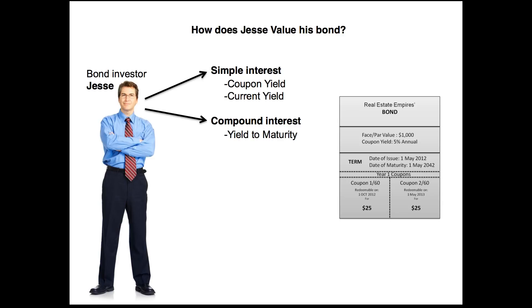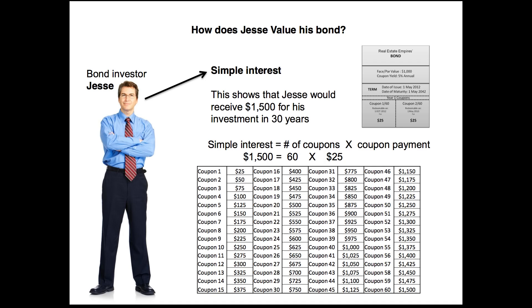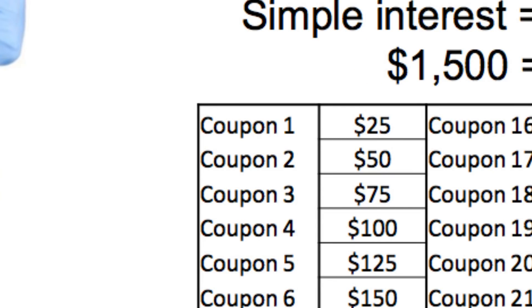Let's get started with simple interest. To understand simple interest, all you do is add up all the value of the coupons. You're not going to assume that you're reinvesting any of the coupons — you're simply collecting those $25 payments throughout the entire term of the bond. The chart might look busy, but as you zoom in and look at the first coupon, you can see it's $25. The second coupon is another $25, so the running total after two coupons is $50.